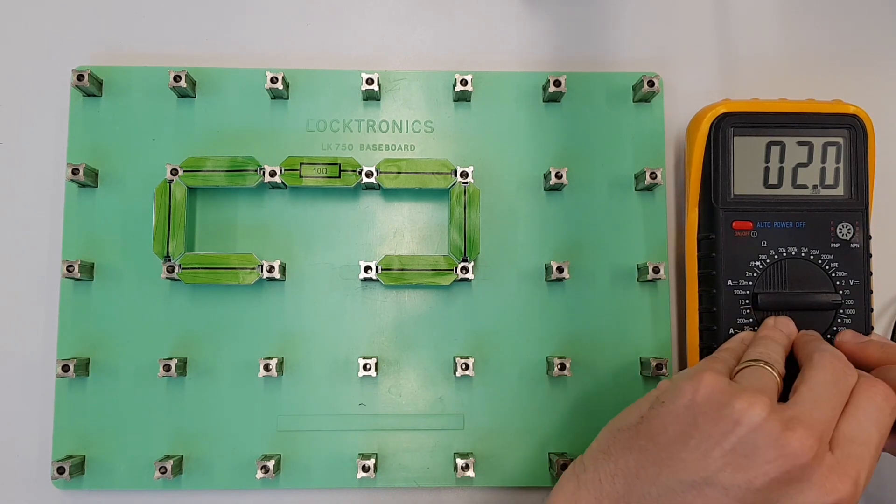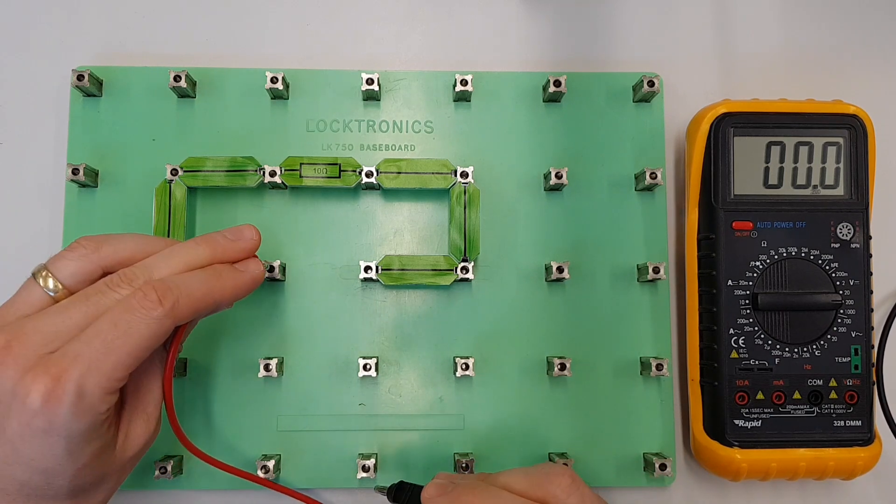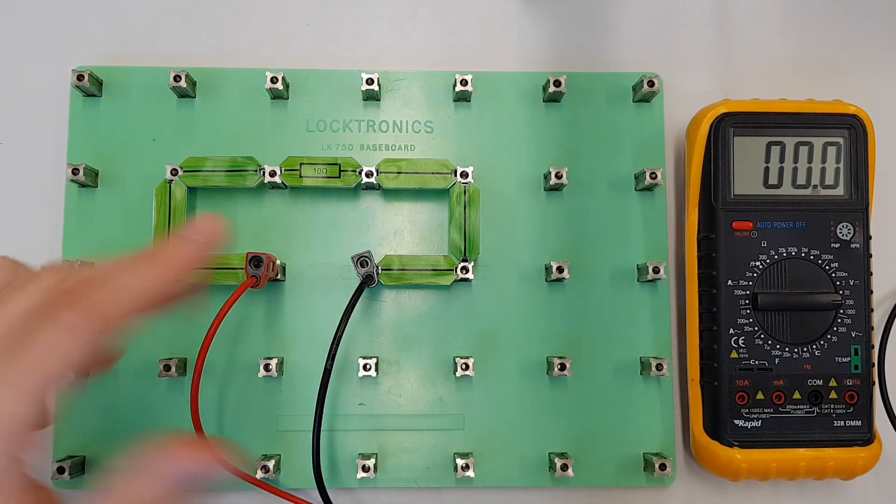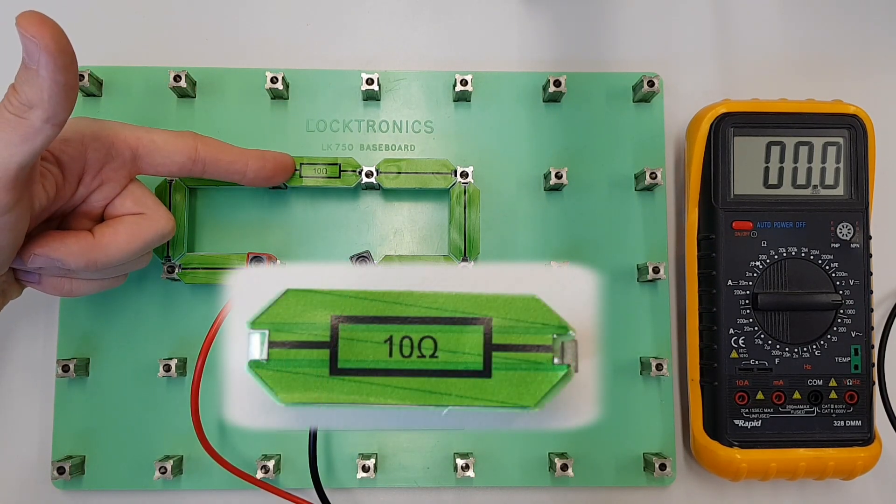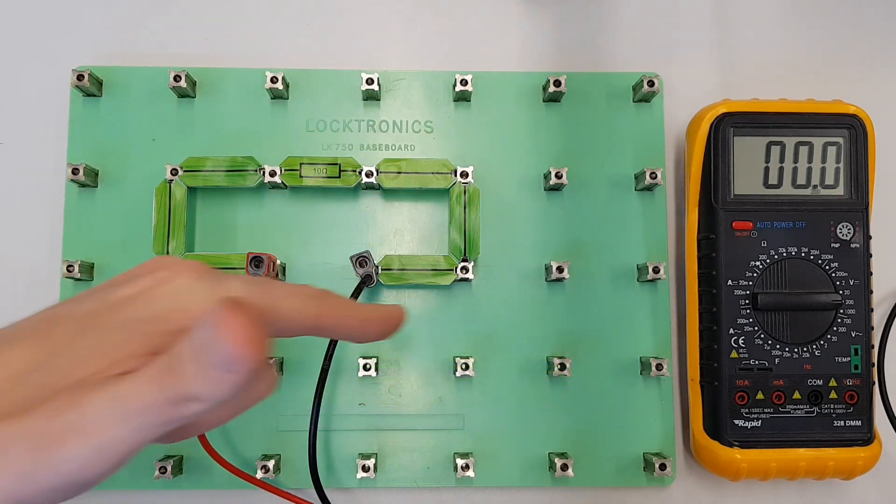So now what I'm going to do is I'm going to take those 2 volts that I've got coming out of the power supply and I'm going to connect them into our circuit. So here we've got a circuit that we've connected our 2 volt supply up to. We're connecting this to a 10 ohm resistor and we're going to see how much current is flowing around the circuit.